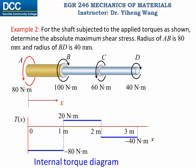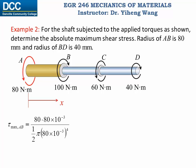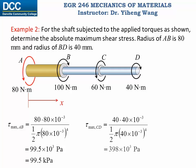We construct an internal torque diagram to show how internal torque changes with position x. Within AB the maximum torque is 80 Nm; within CD the maximum torque is 40 Nm. Because AB and BD have different cross-sectional areas, we calculate the absolute maximum shear stress for both segments. For AB, the maximum shear stress is 99.5 kPa. For BD, it is 398 kPa, which is larger because shaft BD has a smaller cross-sectional area — and that is the absolute maximum shear stress within this composite shaft.